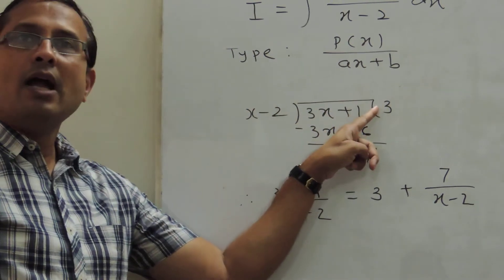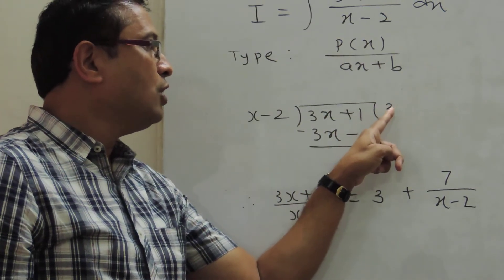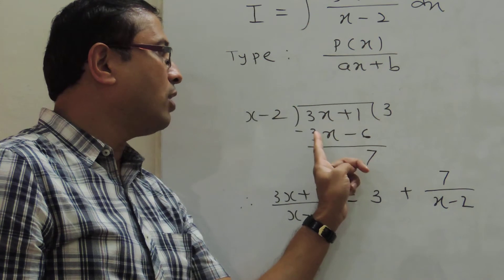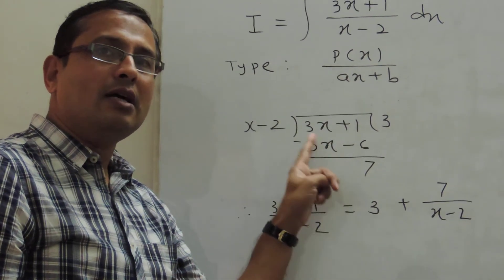3x upon x is 3 and that is why we write 3 in the quotient. So 3 into x minus 2 is 3x minus 6. We subtract this to get 7 as the remainder.